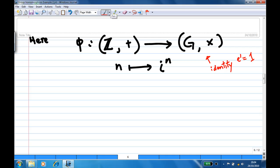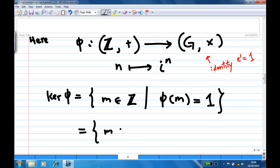Therefore, what we are looking for is the kernel of φ, which is all the integers inside Z such that the image of this integer is 1. That means all integers m in Z such that φ(m), according to its definition, is i^m = 1.